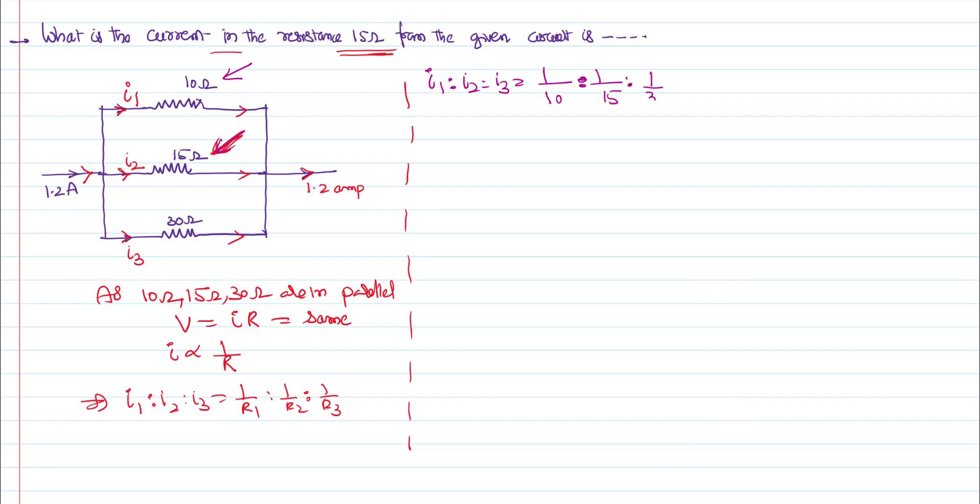So, by cancelling 5, we can further simplify. 1 by 2 is to 1 by 3 is to 1 by 6. That's the ratio of the currents.